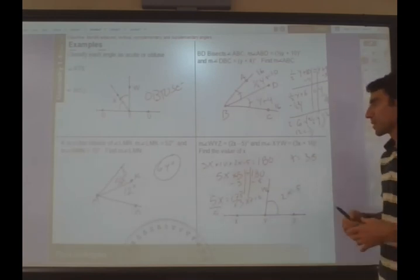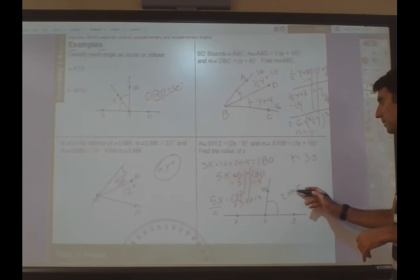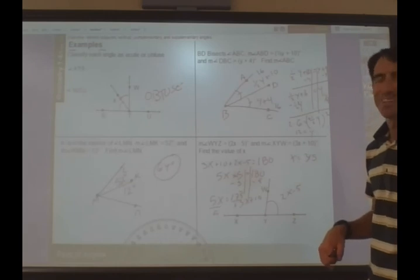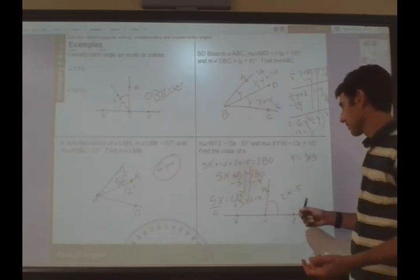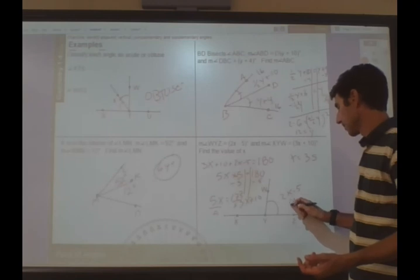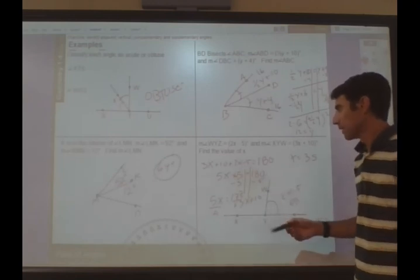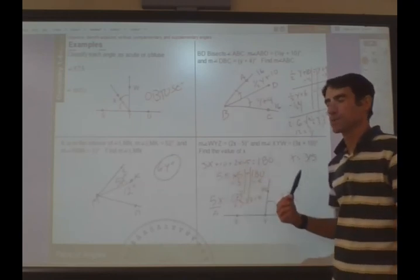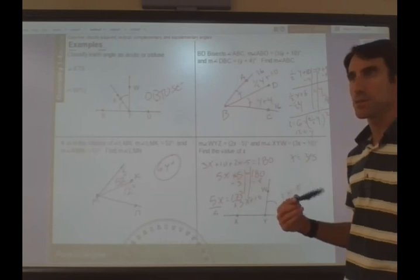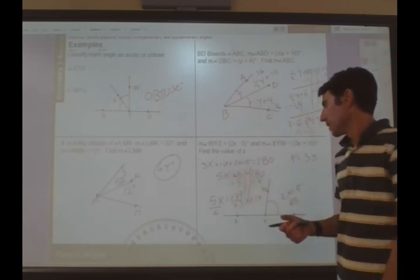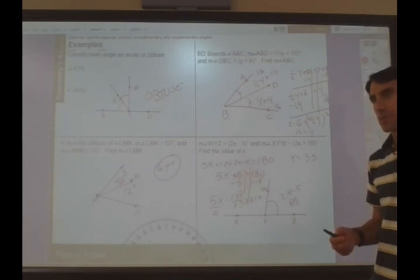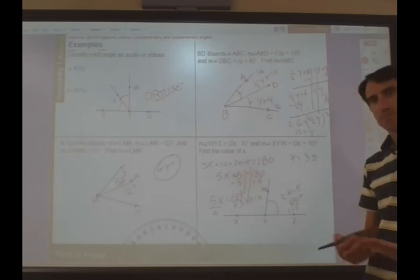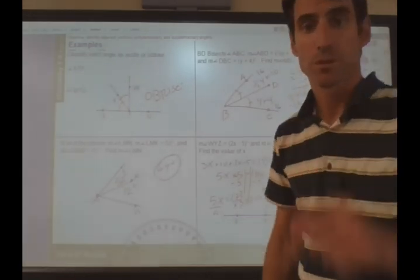All right. So let's double check. Make sure this is right. So 2X minus 5. So 2 times 35 is 70. 70 minus 5 is 65. All right. Let's try this side. So we have 3X plus 10. So 3 times 35 is 90 plus 15, that's 105. 105 plus 10 is 115. 115 and 165 have a sum of 180. So we're good. We double checked.